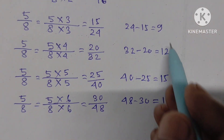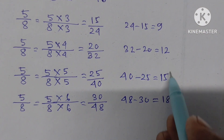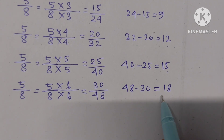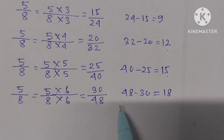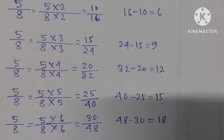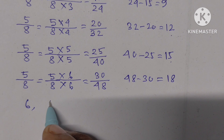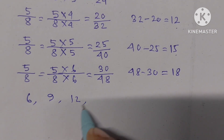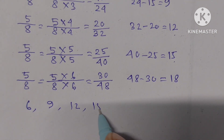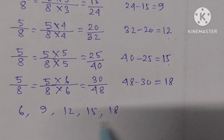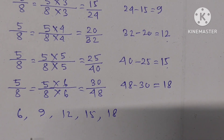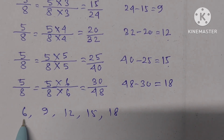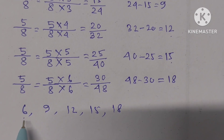The differences are 6, 9, 12, 15, and 18. We have got the pattern by adding 3 each time: 6, 9, 12, 15, 18.